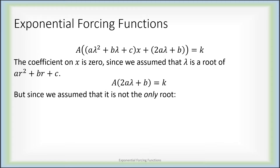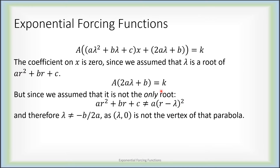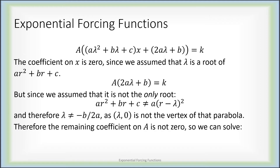Now we assume that lambda is not the only root of the characteristic polynomial — in other words, Ar² + Br + C is not a polynomial whose only root is lambda. That means lambda is not equal to negative B over 2A, so this expression 2A lambda + B is not zero. If that coefficient is not zero, you can divide by it to get that capital A must be k over (2A lambda + B). This is how you account for what to do when lambda is a root of Ar² + Br + C, but it is not the only root.